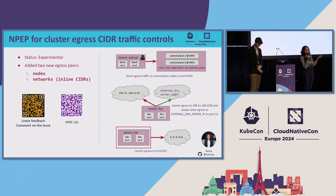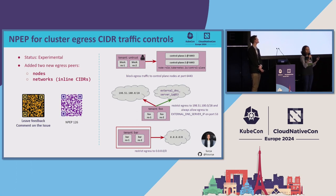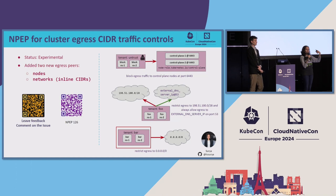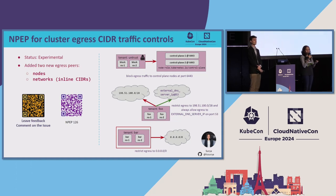The egress traffic controls NPEP is in experimental status, meaning the use cases were accepted and the API is merged, but we will wait six months before it goes into standard channels to get implementation feedback and ensure the API semantics are correct. This NPEP introduces two new peers: nodes and networks. Networks are inline CIDRs — you put your CIDRs as a peer within the object. Some use cases include blocking egress traffic to control plane pods on a specific port, or denying everything to 0.0.0.0/0.